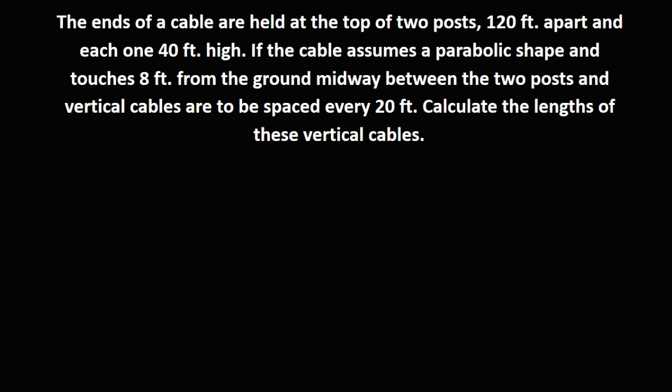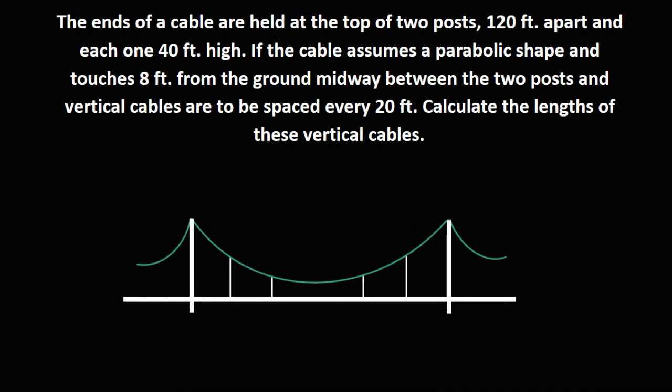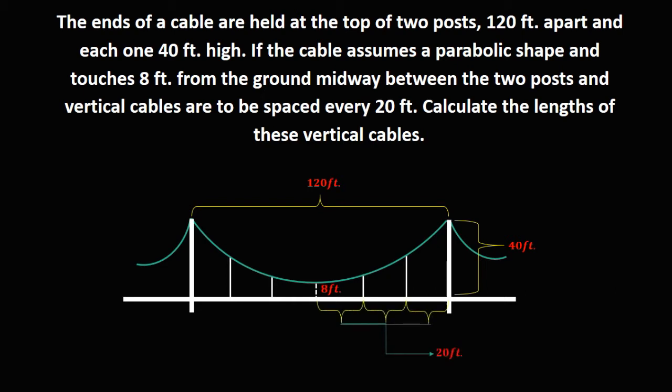Let's solve this problem. The ends of a cable are held at the top of two posts that are 120 feet apart, and the posts are 40 feet high. The cable assumes a parabolic shape and touches 8 feet from the ground midway between the two posts. Vertical cables are to be spaced every 20 feet. We need to calculate the length of these vertical cables.